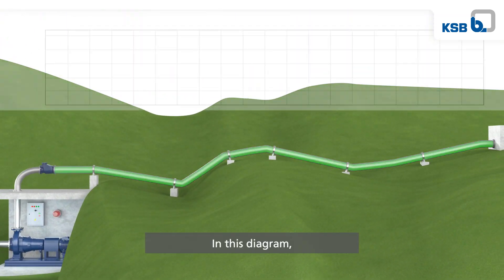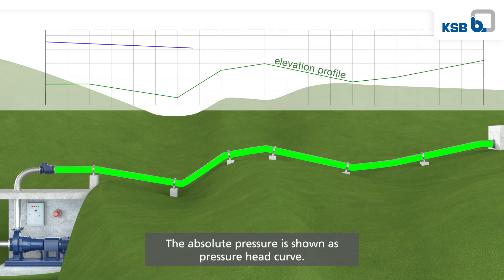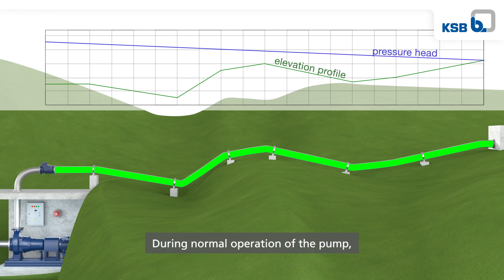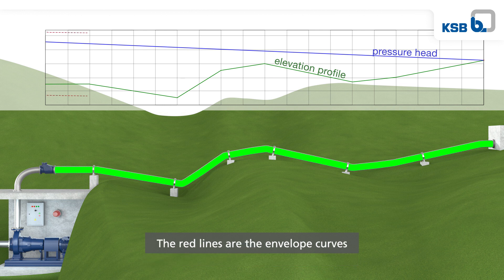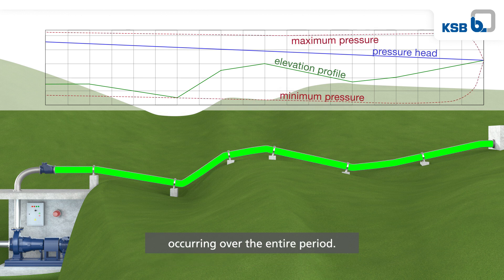In this diagram, the green line represents the elevation profile of the pipeline. The absolute pressure is shown as a pressure head curve. During normal operation of the pump, this curve falls slightly over the entire pipeline profile.